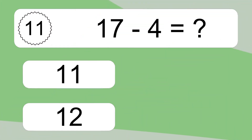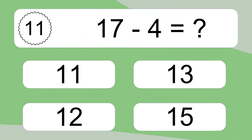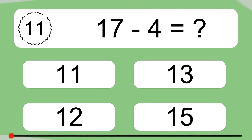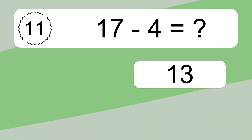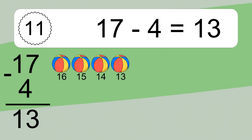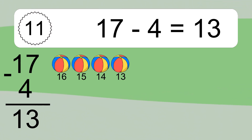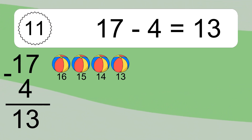17 minus 4 equals what? 17 minus 4 equals 13. Let's count it. 16, 15, 14, 13.